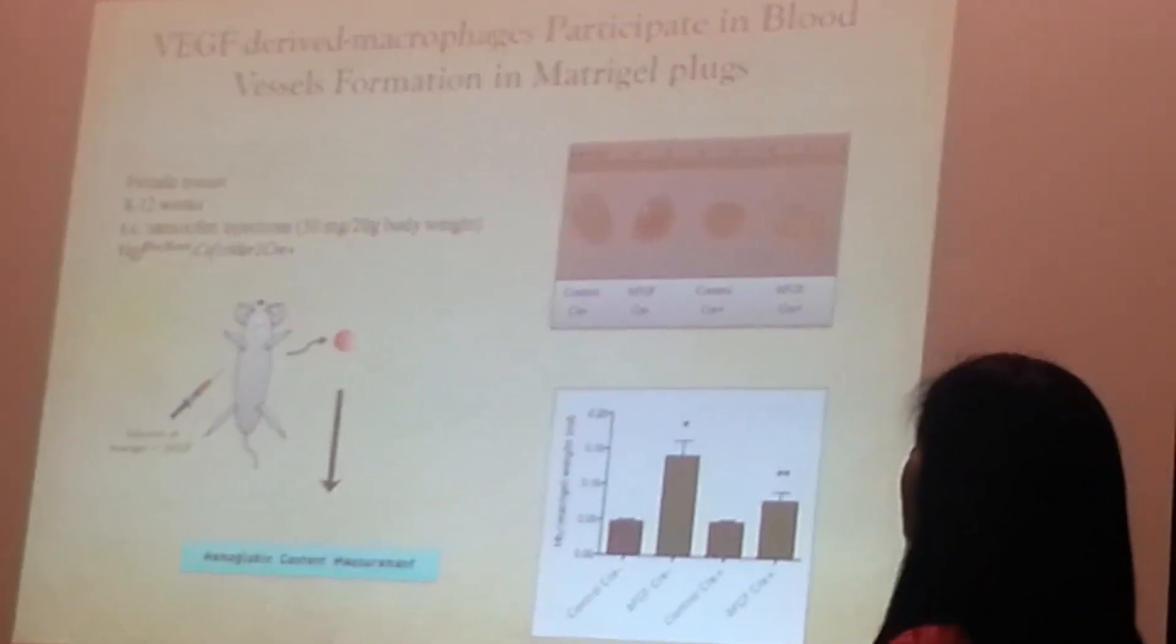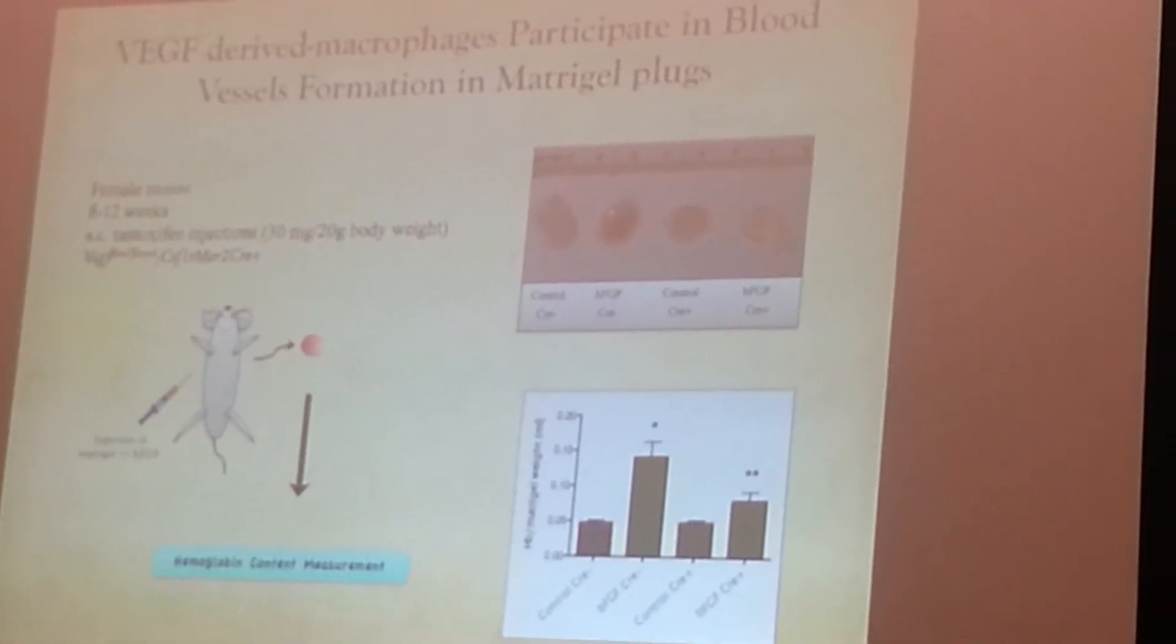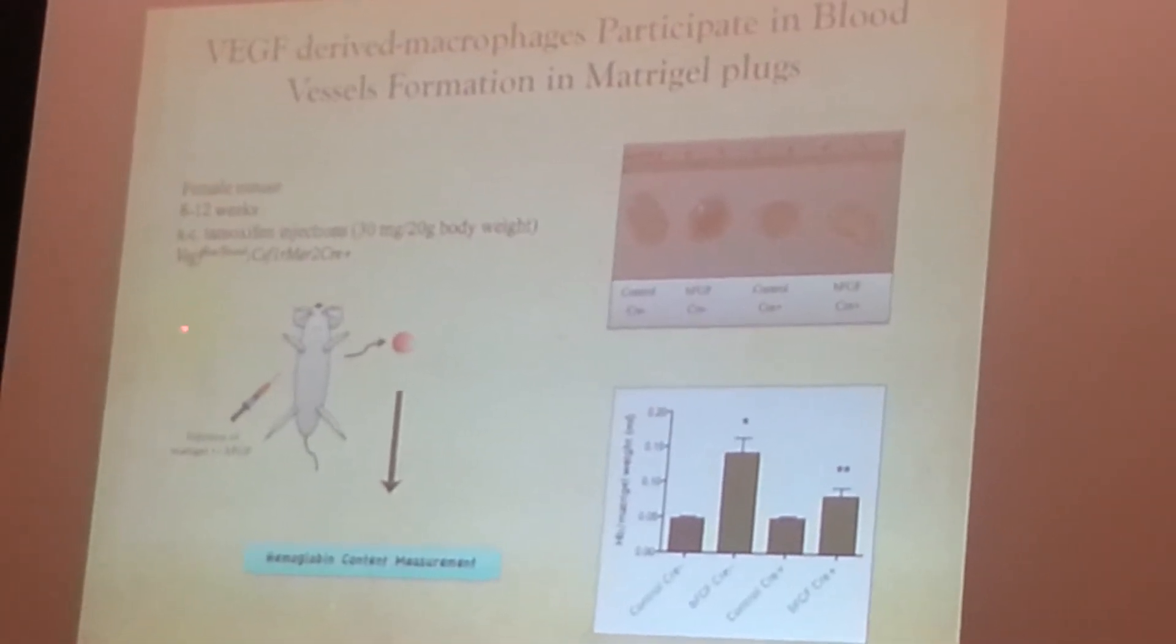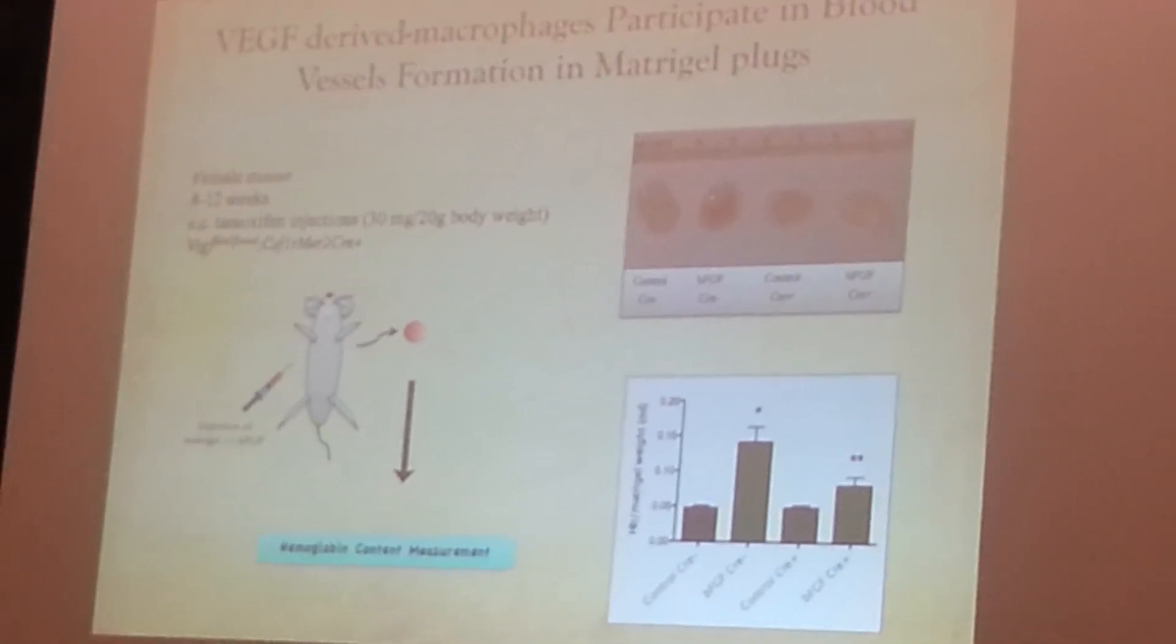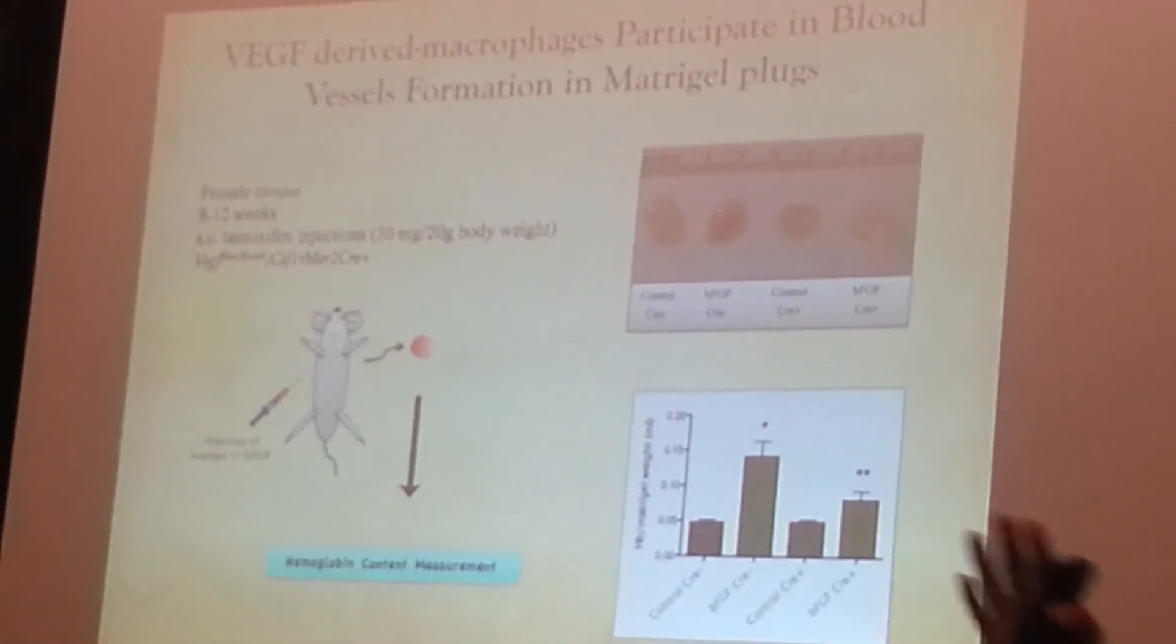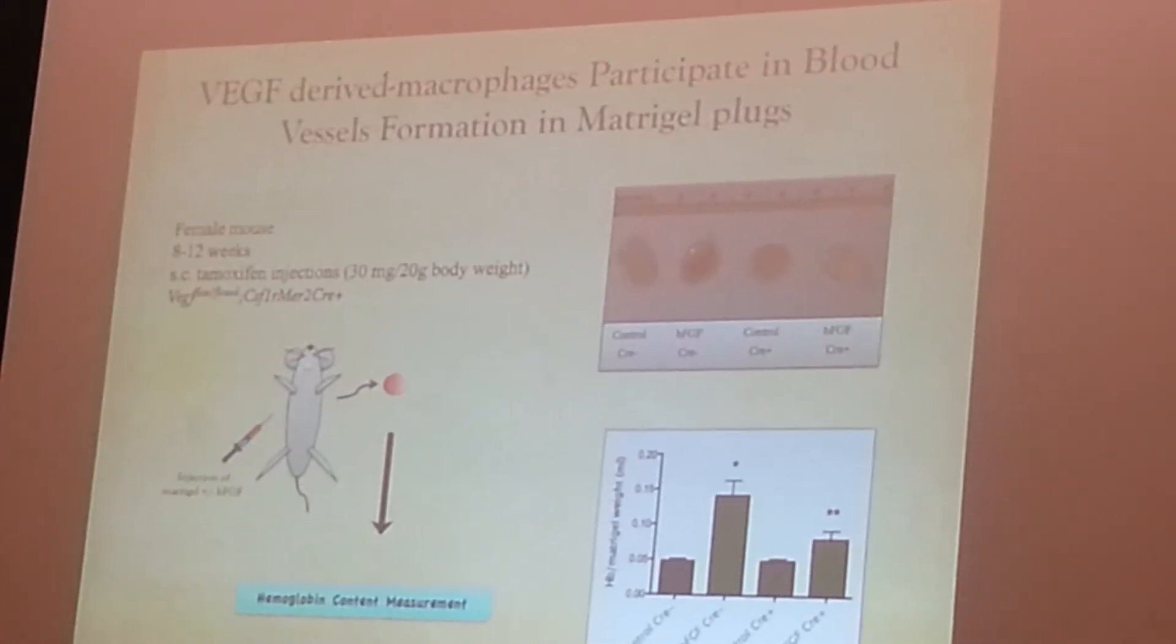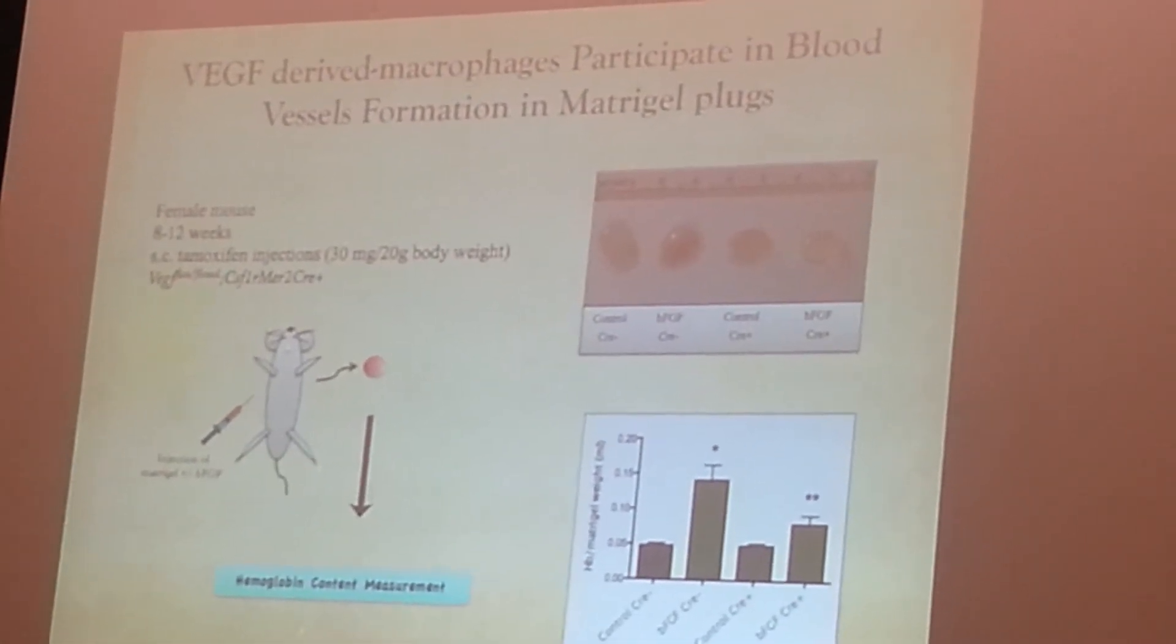For that, we did a cross-breeding between two kinds of animals we have in the lab. One is the VEGF flox, and the other one is the CSF-1 receptor. Cross-breeding between these two makes animals that have macrophages that don't produce VEGF.